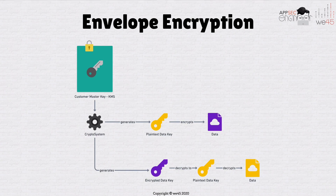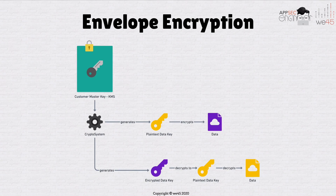Let's say you have an ACME employee directory application and you want to encrypt employee social security numbers. You are not going to directly use the CMK to encrypt. When you initialize your application, you generate from the CMK two keys: the plain text data key and the encrypted data key. You store the encrypted data key in your database and use the plain text data key to encrypt. When a user logs in, the CMK first decrypts the data key, then using that decrypted data key you decrypt the actual data. That's what envelope encryption is all about.